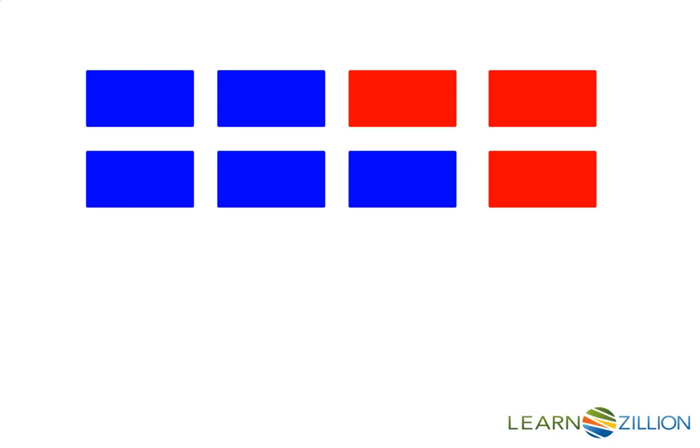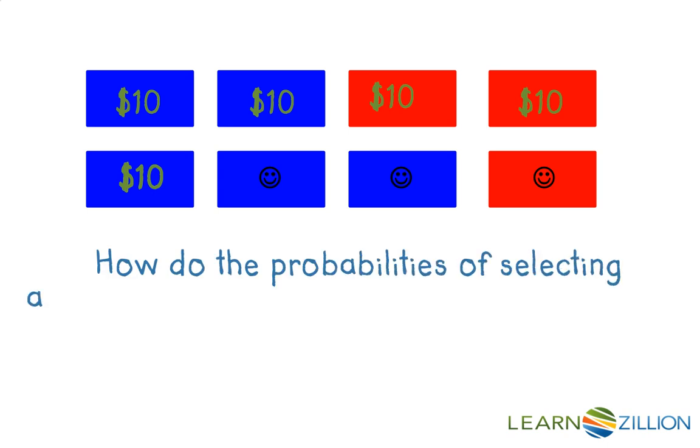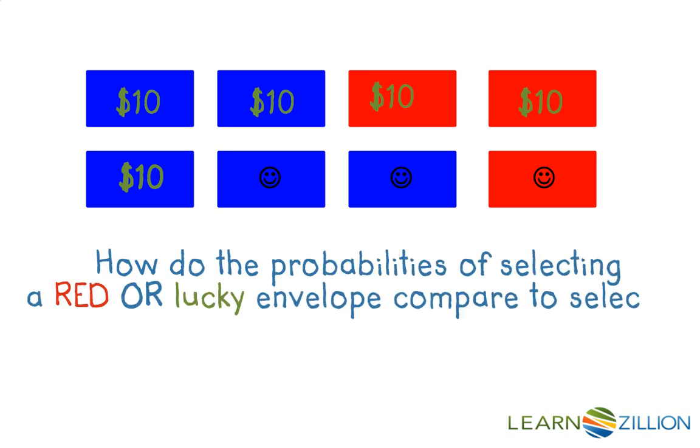In the lucky envelope game, there are five blue and three red envelopes. Three of the blue envelopes and two of the red envelopes are lucky and contain a $10 bill. Each of the remaining envelopes contain a smiley face and the message have a nice day. How do the probabilities of selecting a red or lucky envelope compare to that of selecting a red lucky envelope?